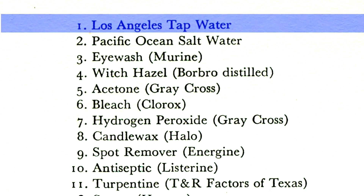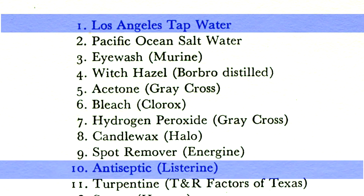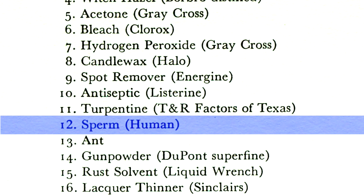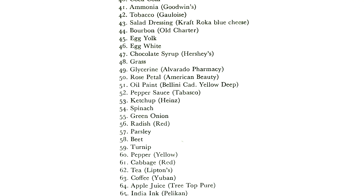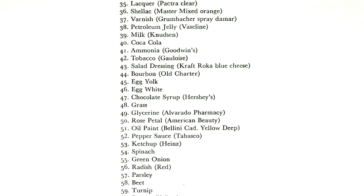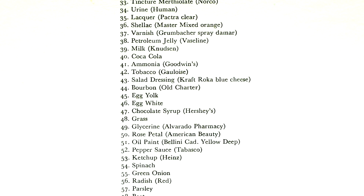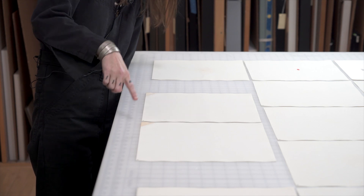For example, it starts out with tap water and sort of antiseptic turpentine. So you can imagine you're in the studio, but really early on — say number 12 — you see that there's sperm, and then in parentheses, human. There's an interspersing of things like pepper sauce with paint, with chocolate syrup, with varnish, with lacquer, etc. So you just see this back and forth between art materials and these kinds of bodily materials, whether they're food or urine or sperm.